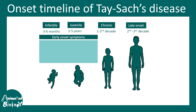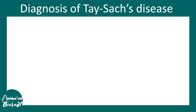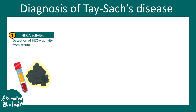Early onset symptoms include decreased muscle tone, abnormal reflexes, seizures, and visual disturbances. Late onset symptoms include mostly motor defects, bipolar disorders, and mental problems.